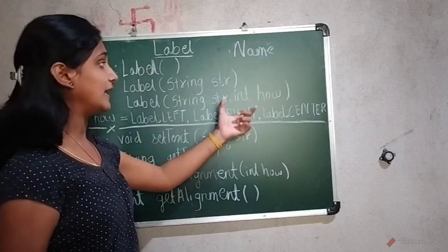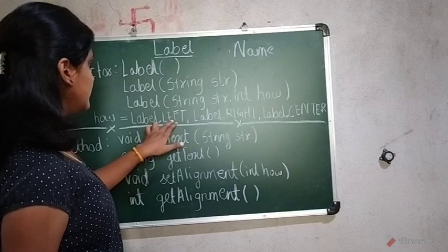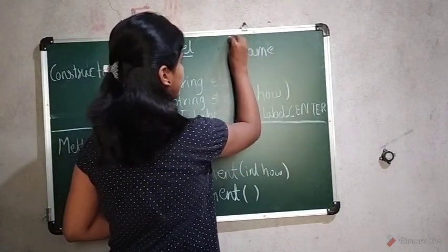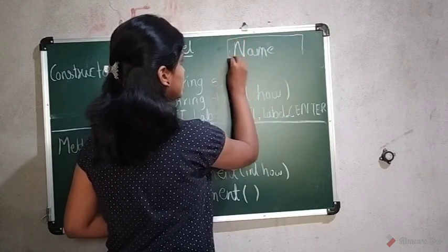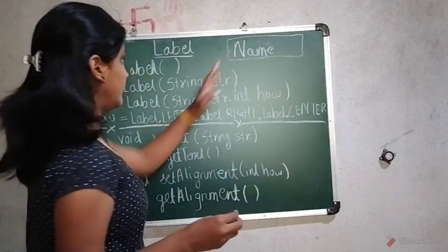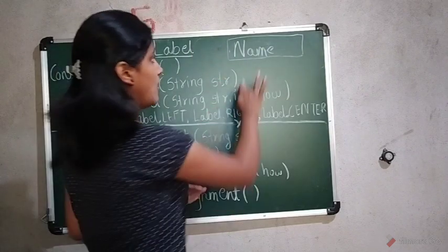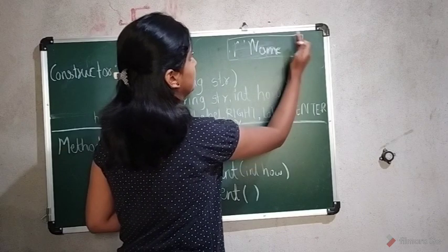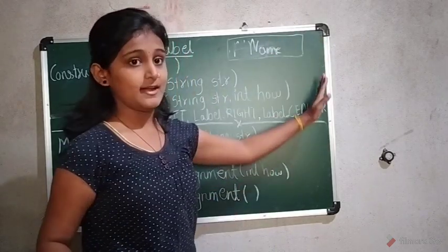Now how exactly it works? Suppose here is left means label.left. Now suppose this is a text field. If you use label.left, then this will be at this side. If you have used the center, then it will be here. And for right, it will be at this side, to the right side.